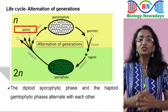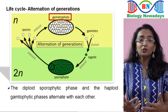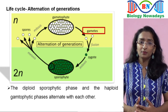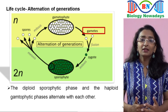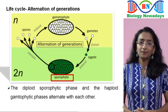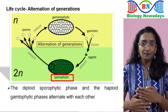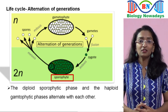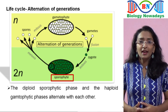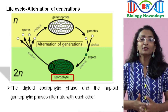The haploid spores germinate and grow into a haploid gametophyte. At maturity, the gametophyte produces gametes by mitosis, which does not alter the number of chromosomes. Two gametes fuse to produce a diploid zygote, which develops into a diploid sporophyte. In this way, the sporophytic and the gametophytic phases alternate with each other. This phenomenon is called alternation of generations. The lengths of the haploid and diploid phases and whether these phases are free-living or dependent on others vary among the different groups in plants.